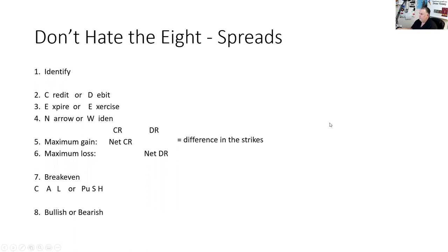The first thing you have to be able to do on a spread is identify it. Even if that wasn't a test question — it is. But if you can't identify the spread, you're kind of going to be stuck. The way you identify it is you're long and short the same type of contract. You have two types of contracts: calls and puts. So we have two versions of a spread: call spreads and put spreads.